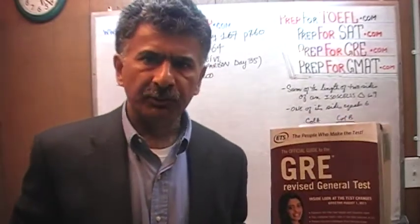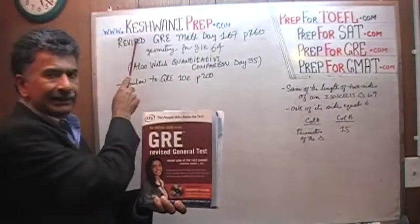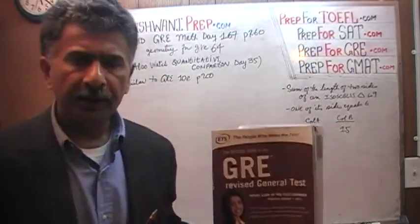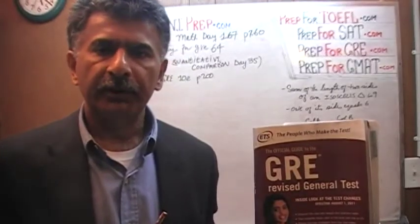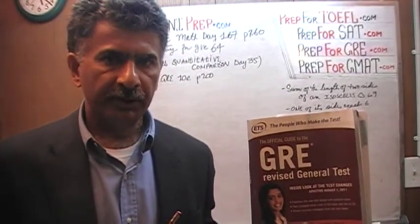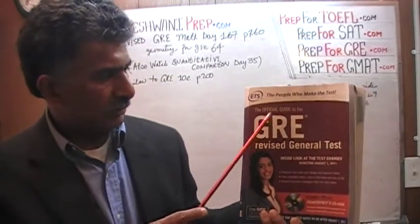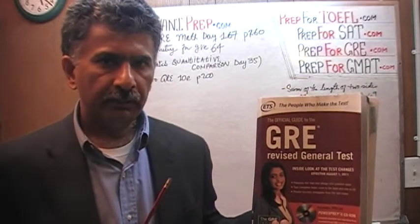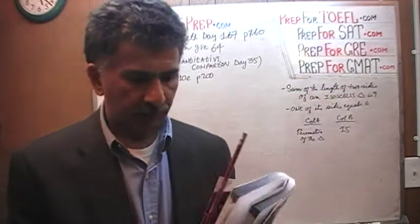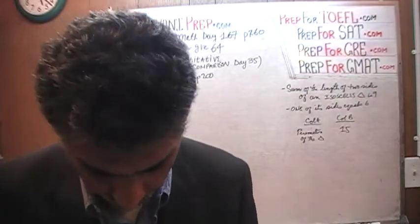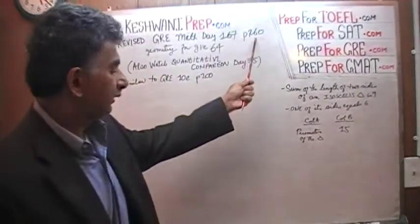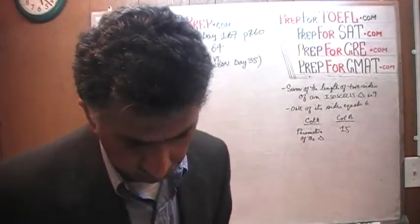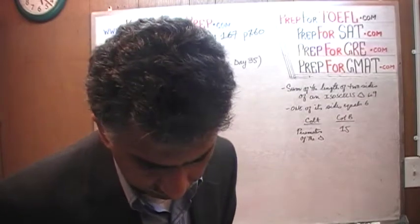Hello, my name is Keshwani — K-E-S-H-W-A-N-I. We are here because we want to prepare for the GRE. We have been solving GRE math problems out of this book, the Official Guide to the GRE, the Revised General Test. If you do not own this book already, purchase one immediately — you are going to need it. The problem we are about to solve is on page number 260, and today is lesson number 167. Please turn to page 260; the problem we are about to do is number 6.